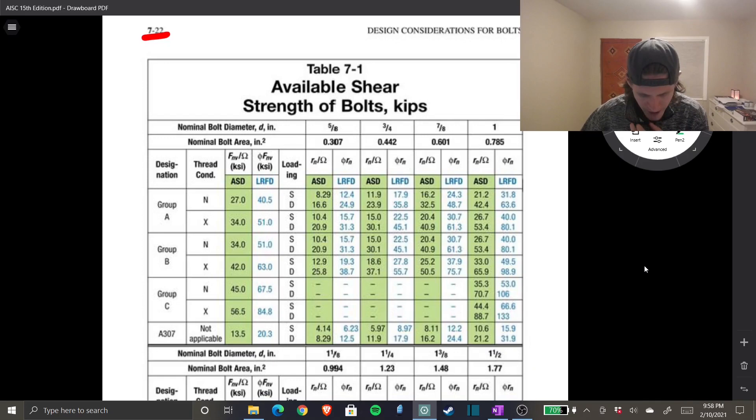We know that we have A325 bolts, that is what group A stands for. Group B is A490 bolts. We know that we have an N type thread condition and we know that N means that our threads are within our shear plane, which means we're going to get less capacity in shear from our bolts because those threads means it's a reduced section and that reduced section is sitting in the shear plane of our bolts.